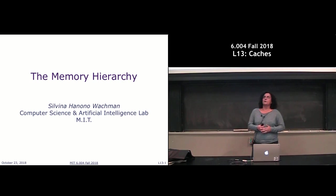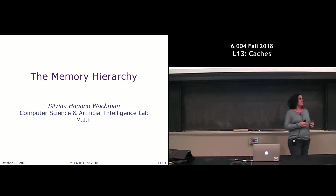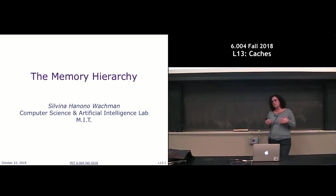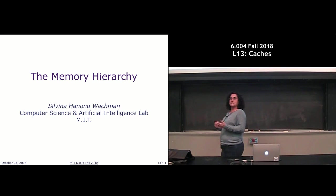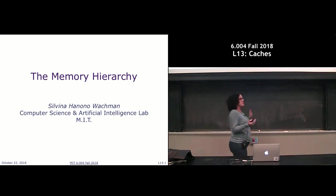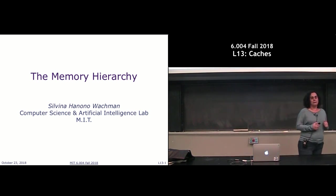Last time we talked about how we go about building our CPU, or central processing unit, and we talked at a high level about it talking to a memory — we kind of treated the memory like a black box. Today we're going to take a closer look at what this memory really looks like and how we need to use different types of memory technologies in order to achieve the best performance.